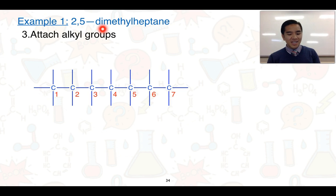We can see here that it is a dimethyl. So it means that we've got two methyl groups, and they are positioned on carbons 2 and carbon 5. So let's add the methyl group on carbon 2 and 5.